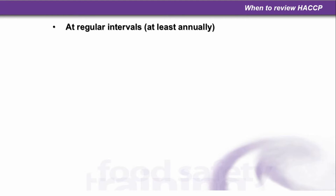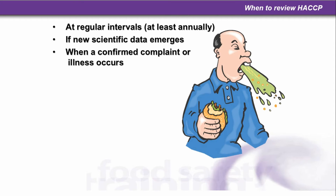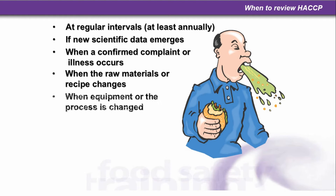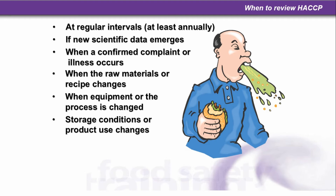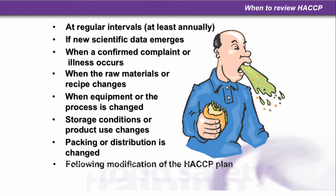When to review HACCP? At least at regular intervals, and this should be at the very least annually. Or when something goes wrong, or if new scientific data emerges before the year is up, or when a confirmed complaint or illness occurs. Similarly, when raw materials or the recipe changes, when equipment or the process is changed, when storage conditions or product use changes, or when packaging or distribution is changed, or following modification of the HACCP plan.